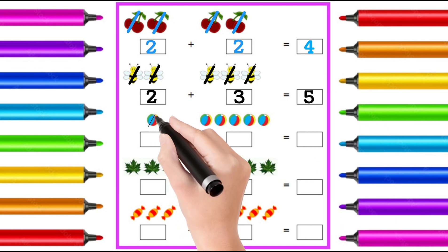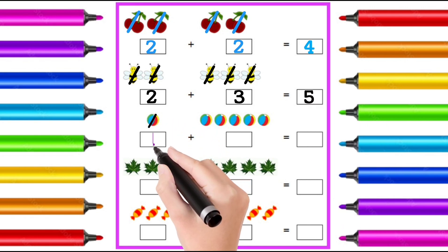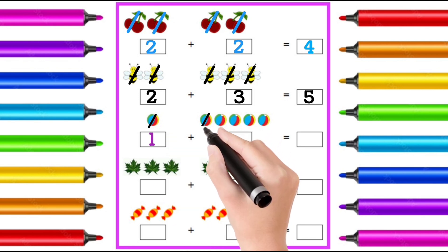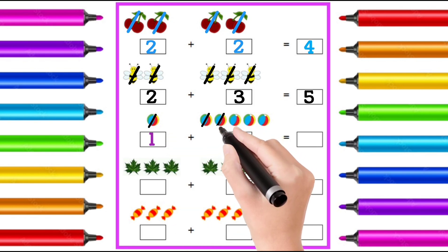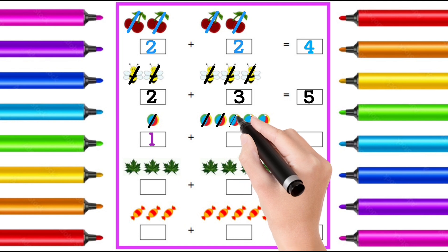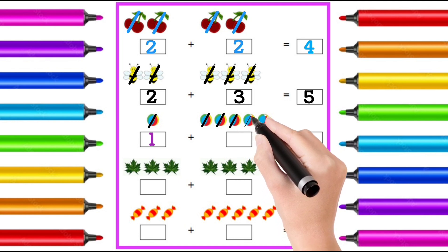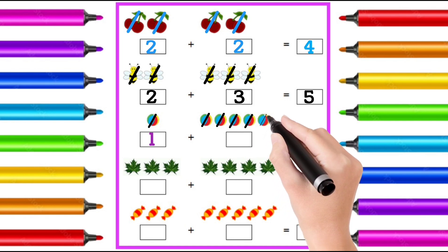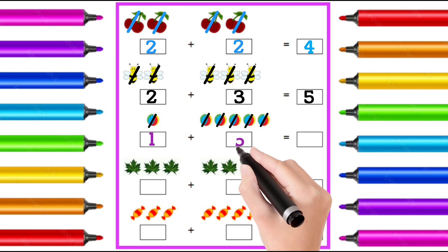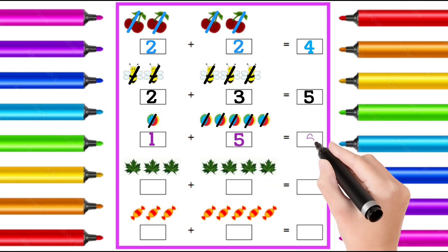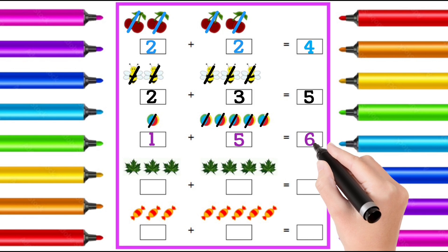1 — it is 1. 1, 2, 3, 4, 5 — it is 5. 1 plus 5 is equal to 6.